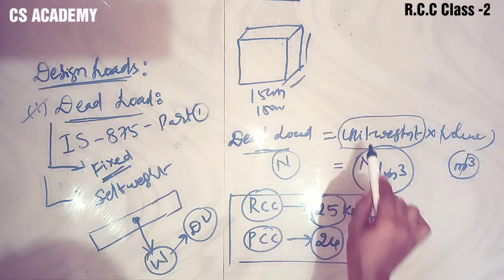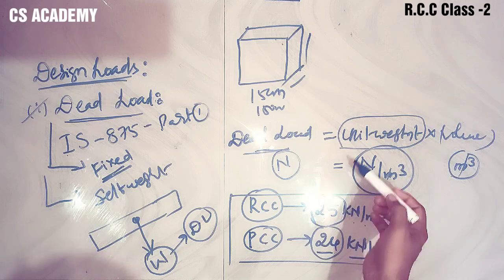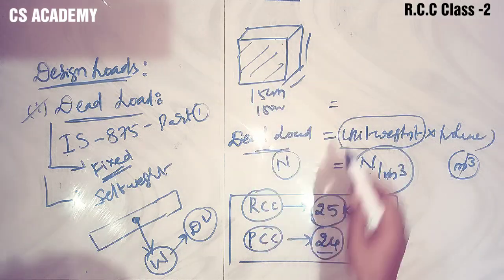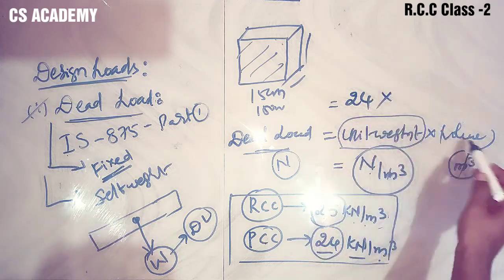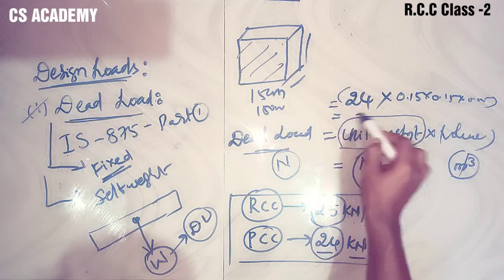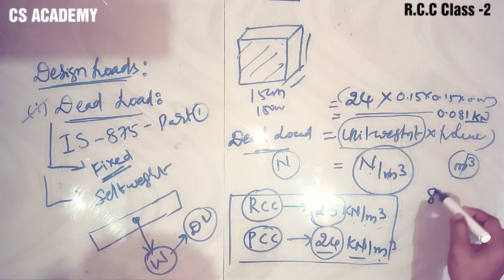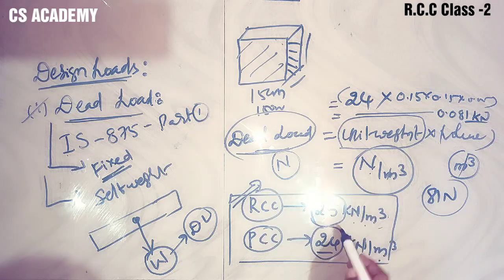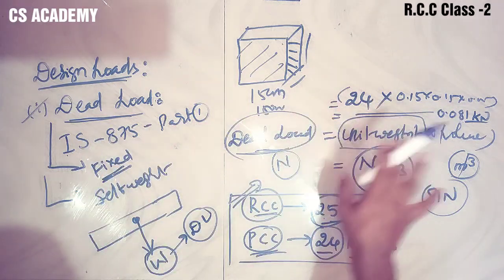Reinforced cement concrete unit weight is 25 kN per meter cube. Plain cement concrete (PCC) unit weight is 24 kN per meter cube. This is very important for exams. So to calculate dead load: take the unit weight - RCC is 25 kN/m³, PCC is 24 kN/m³ - multiply by volume to get the dead load.